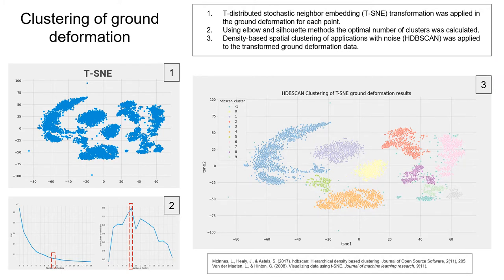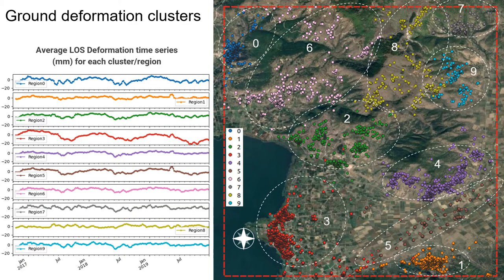Next, clustering analysis of the ground deformation time series has been performed in order to reduce the volume of the data to be analyzed. The TSNE transformation followed by an HDBscan clustering yielded the presented results. In this slide you can see the localization of the extracted clusters, which from now on we will call regions. On the left hand side we can see the deformation time series of each region. Some of the regions appear to have stronger seasonal patterns than the others.